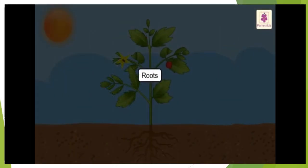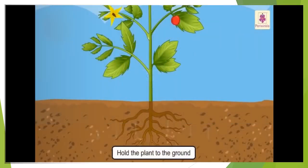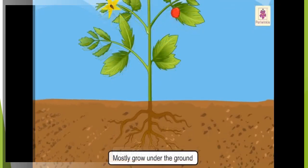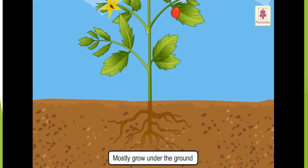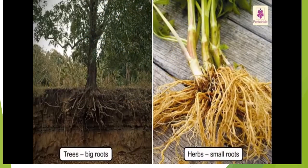Shall we recall them? The first one is roots. Roots hold the plant to the ground and they mostly grow under the ground. Trees have big roots and herbs have small roots.